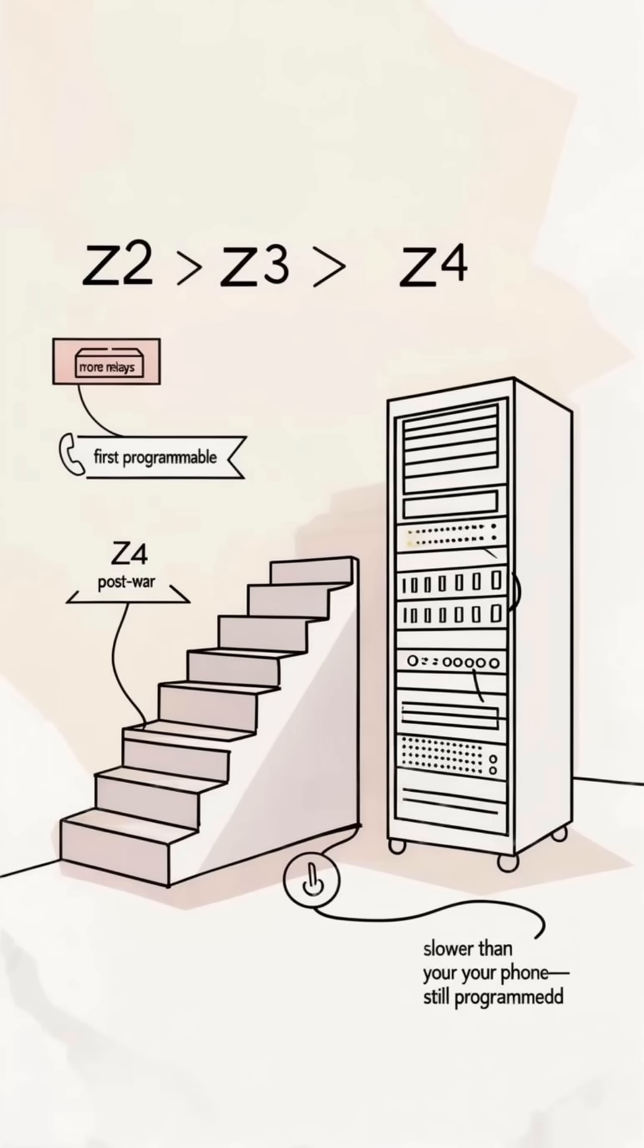Then Z2, more relays. Z3, first working programmable electromechanical computer. And Z4 after the war. Room-sized giants. Slower than your phone, but programmable. And that's the magic.